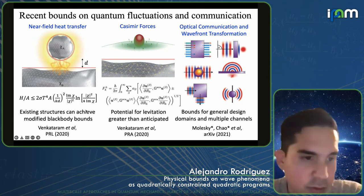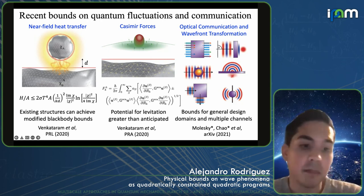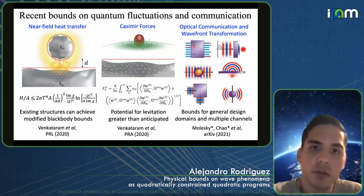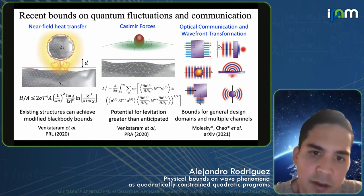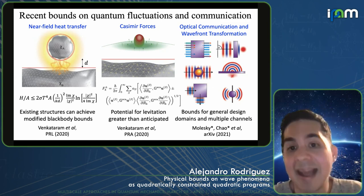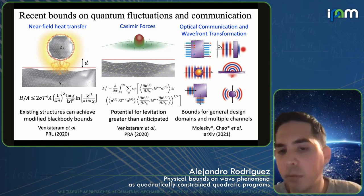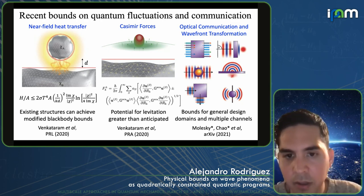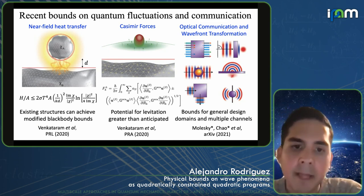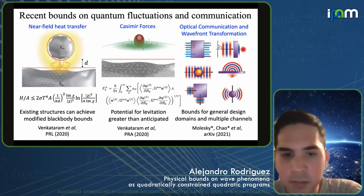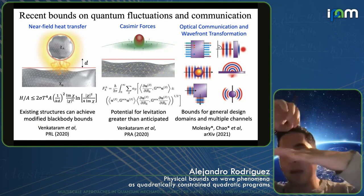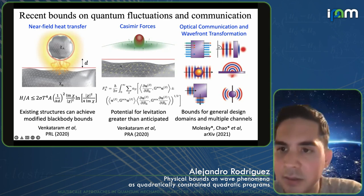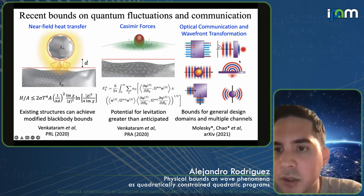We were able to show that existing structures can achieve these modified bounds and precisely what kinds of structures can do that. We've also applied the same techniques to compute limits on Casimir forces, Casimir-Polder forces, and quantum forces arising from quantum fluctuations. For example, we were able to show there's a pretty large potential for levitating objects using nanostructuring and the Casimir force.